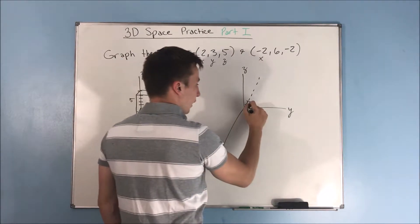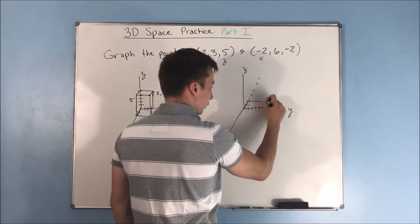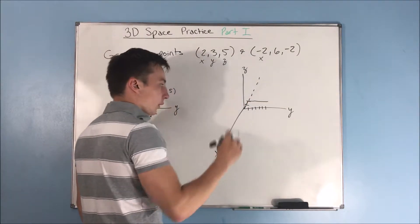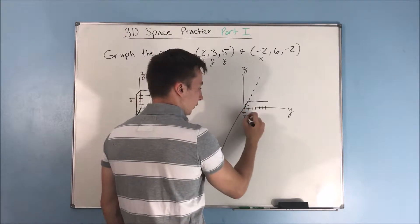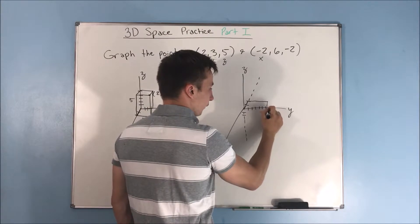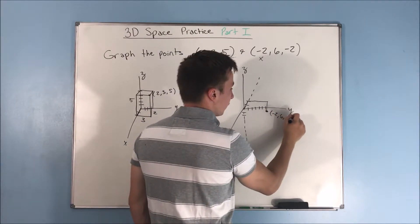Then we go 6 in the y direction, 1, 2, 3, 4, 5, 6. So we'll go over to here. And then we're going to go 2 down. So we're going to go 2 in the z direction. So we'll go down 2. And that will be negative 2 comma 6 comma negative 2.